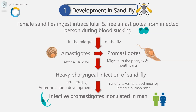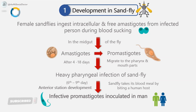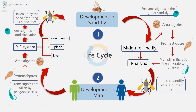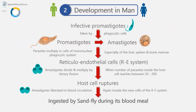The infective sandfly takes its blood meal by biting a human host, and inoculation of the infective promastigotes occurs. Development in man (definitive host): following inoculation, promastigotes are taken up by phagocytic cells and develop into amastigotes. Transmission may also occur by contamination of the bite wound and by contact. The parasites multiply in cells of the mononuclear phagocytic system, especially of the liver, spleen, and bone marrow.